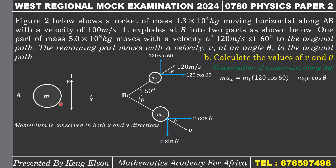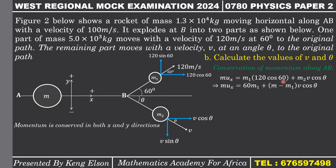So we have: m × u_x = m1 × 120 cos 60 + m2 × v cos theta. Here, 120 cos 60 is the horizontal component of the velocity of the part with mass m1 along AB, and v cos theta is the horizontal component for mass m2. Since cos 60 = 1/2, we get 120 × 1/2 = 60, so the equation becomes: m × u_x = 60 m1 + m2 × v cos theta.